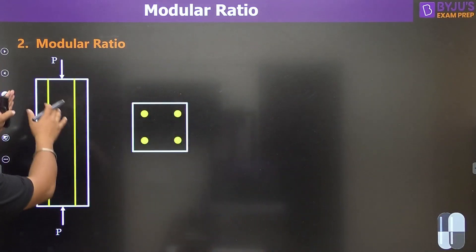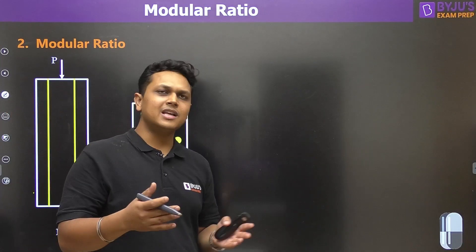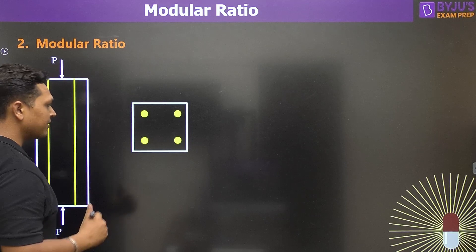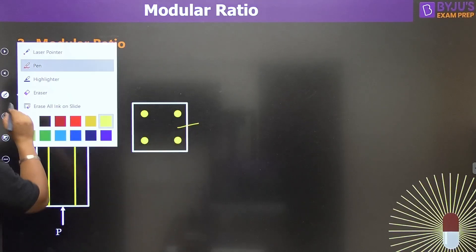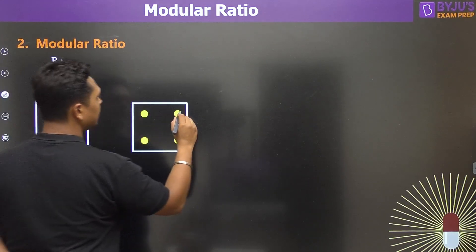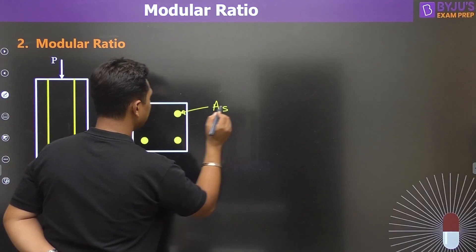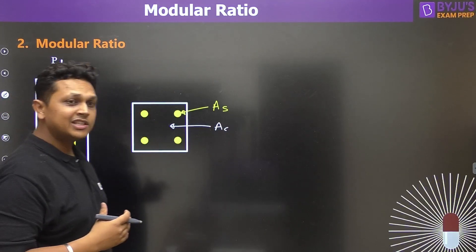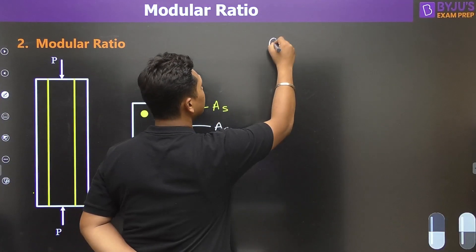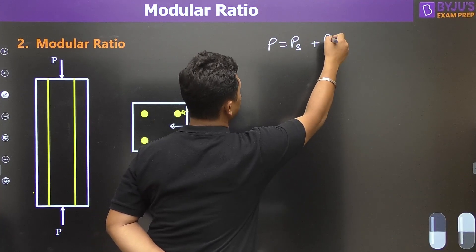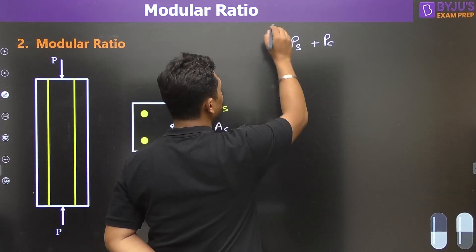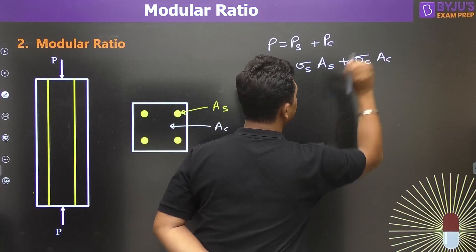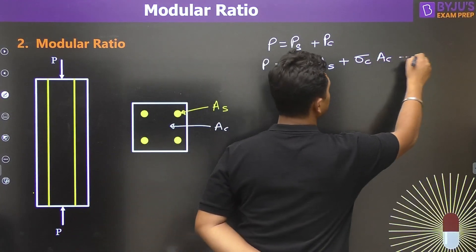Let me explain through a simple example. Consider an RCC column subjected to load P. The cross-section has an area of concrete and an area of steel. The total load P is resisted collectively by both materials, so: P = load resisted by steel + load resisted by concrete, which equals (σ_steel × A_steel) + (σ_concrete × A_concrete). This is our first equation — a simple equilibrium equation.